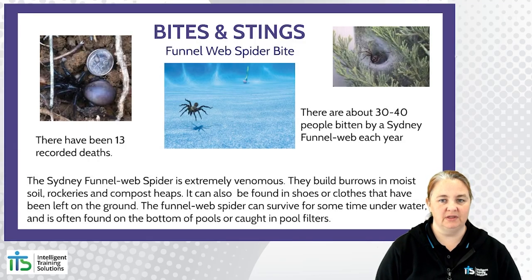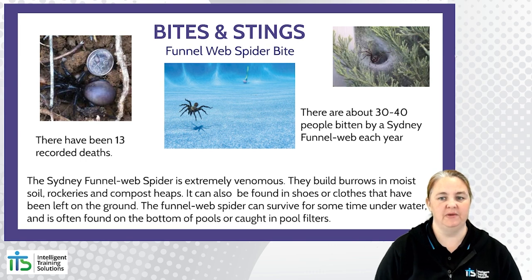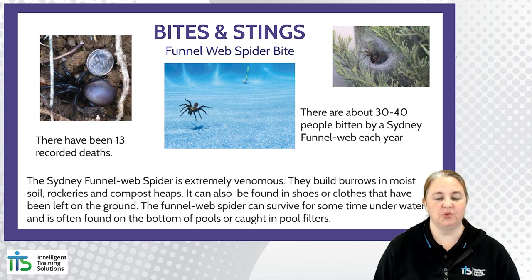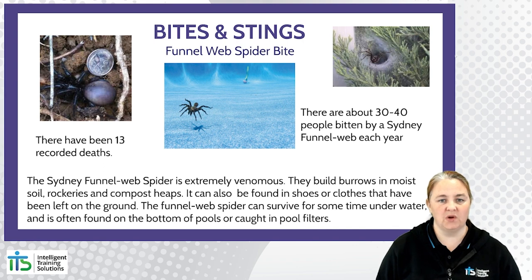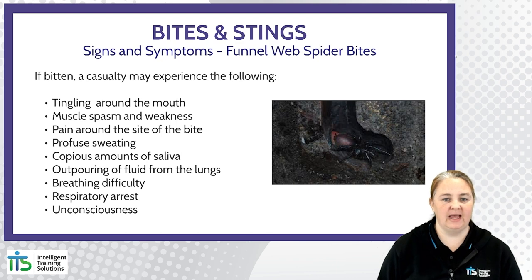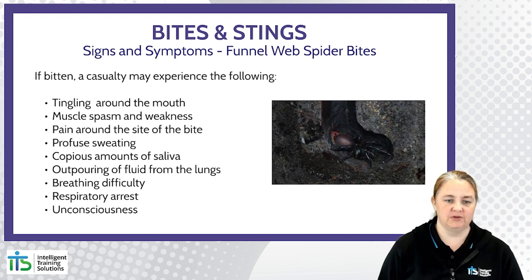The bite of a Sydney funnel web spider is absolutely one you'll treat with the pressure immobilisation technique. There have been 13 recorded deaths attributed to the Sydney funnel web, and about 30 to 40 people are bitten in Sydney each year; however, with good first aid care the outcome can be very positive. The Sydney funnel web is extremely venomous and builds burrows in moist soil, rockeries and compost heaps. It can also be found in shoes or clothes left on the ground, and can survive for some time underwater — often found at the bottom of pools — but submersion does not mean it's dead. Symptoms of a bite may include tingling around the mouth, muscle spasm and weakness, pain at the site, profuse sweating, copious saliva, outpouring of fluid from the lungs, breathing difficulty, respiratory arrest and unconsciousness.